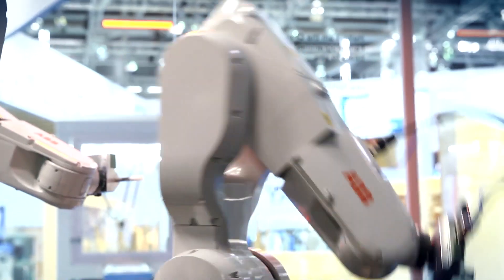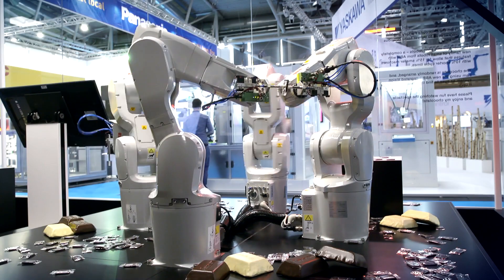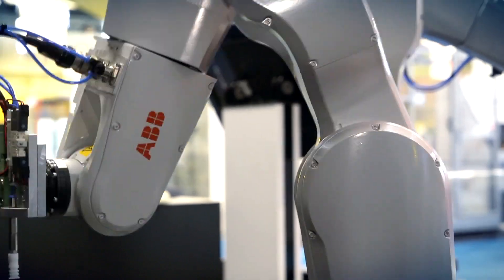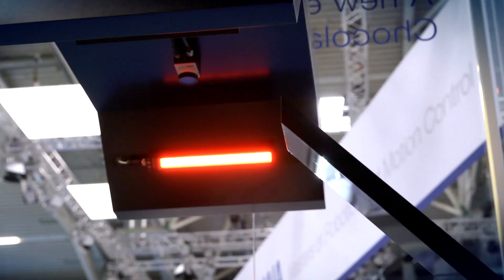I'm here at Automatica 2014 standing in the ABB booth. Right behind us we've got the IRB-1200, our newest robot, being led by Integrated Vision up there. And we're lucky enough to have the product managers for both products here. Kloss Bankson, Integrated Vision, Phil Crowther with the IRB-1200.